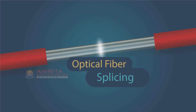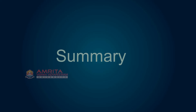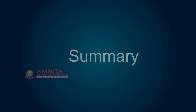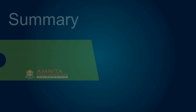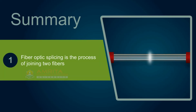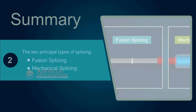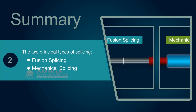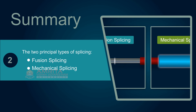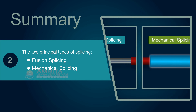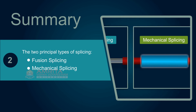With that, we've come to the end of the session. Let's now recollect the key points. Fiber optic splicing is the process of joining two fibers. There are two principal types of splices: fusion splicing and mechanical splicing.